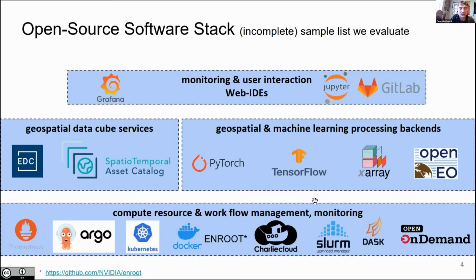Regarding data processing, Dask is a nice parallel processing framework to serve these data cubes — spatially and temporally rasterized pixelated versions of geospatial data. For deep learning, PyTorch and TensorFlow need to be integrated. The Europeans have quite a push to develop the European Data Cube, which is an important thing we try out. There is also the STAC — Spatial Temporal Asset Catalog — essentially a lightweight meta-database for indexing all files where geospatial information like satellite or weather data is stored, providing a unified framework to access them.